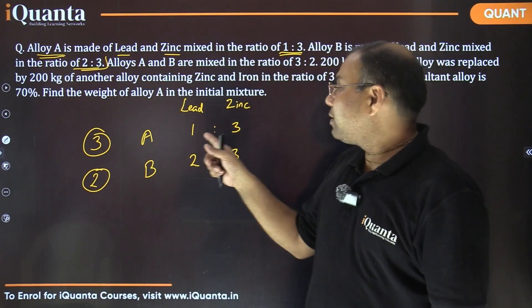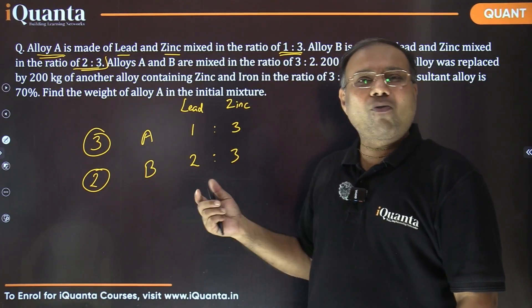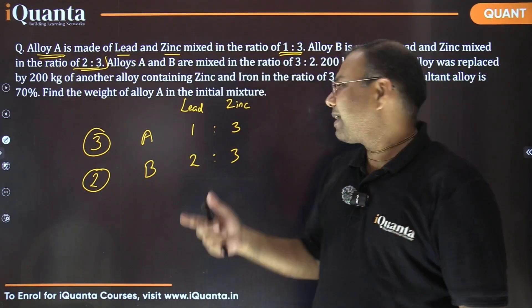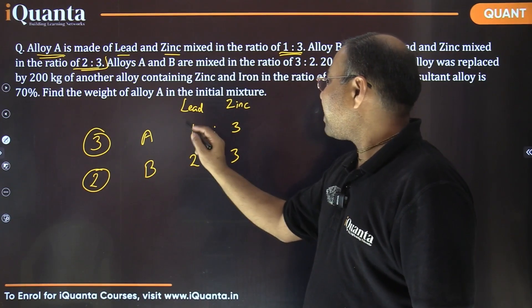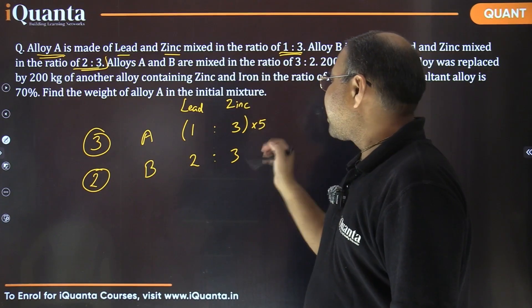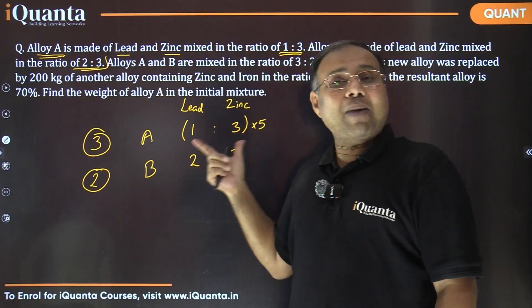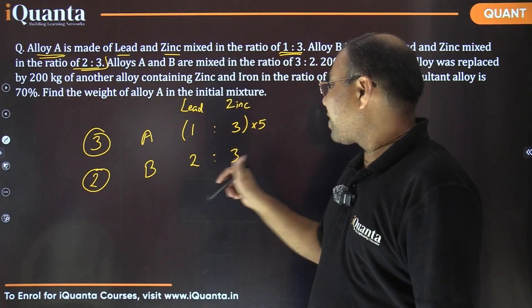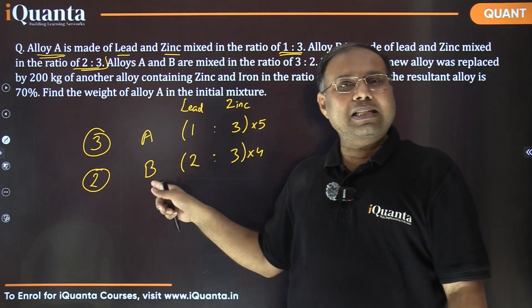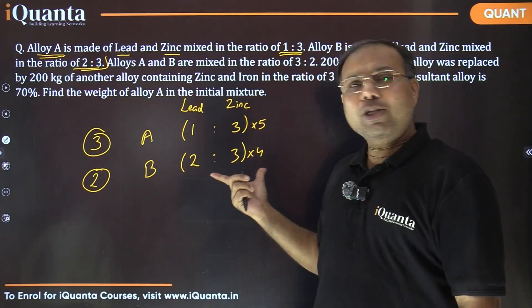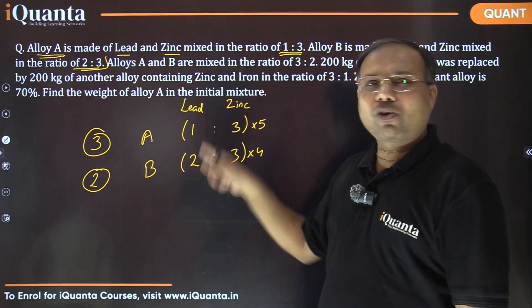Alloy A has a total of four parts (1+3), and alloy B has five parts (2+3). To make them equal, we take the LCM of 4 and 5, which is 20. So we multiply alloy A's quantity by five — four times five is twenty units per part. For alloy B, we multiply by four — five times four is twenty units per part as well.